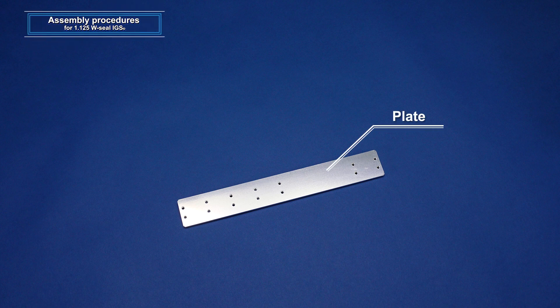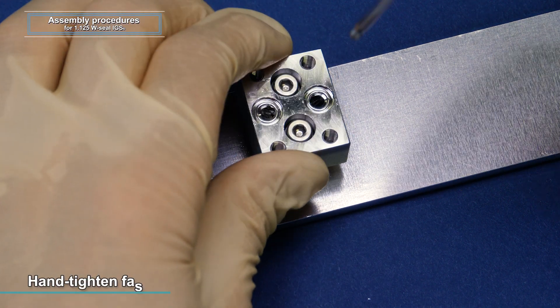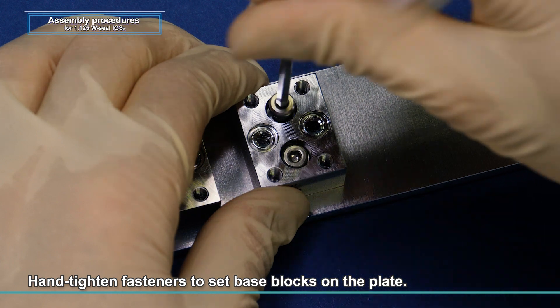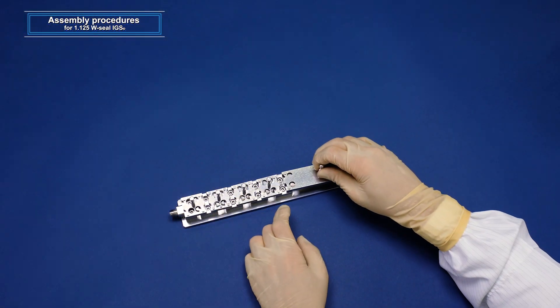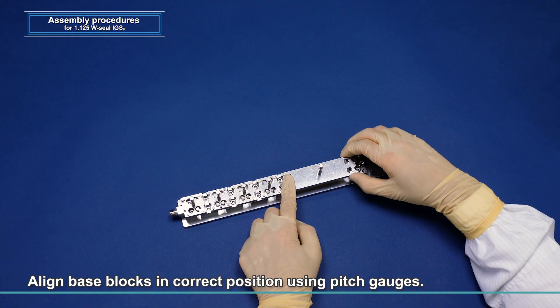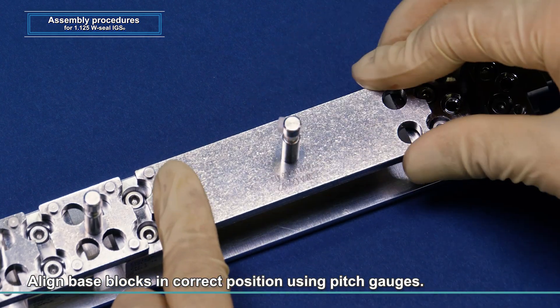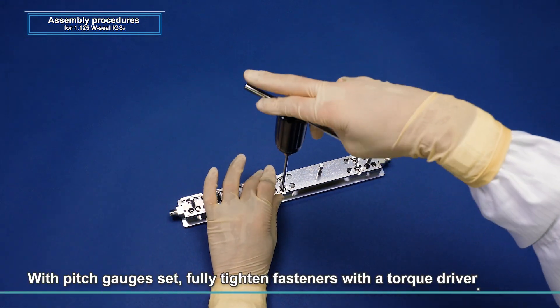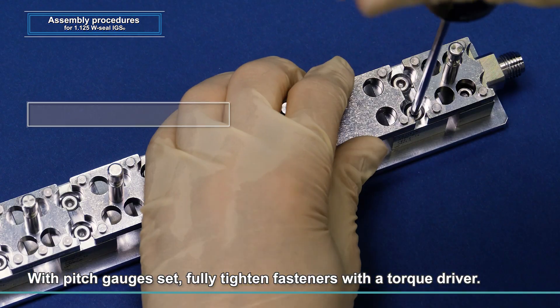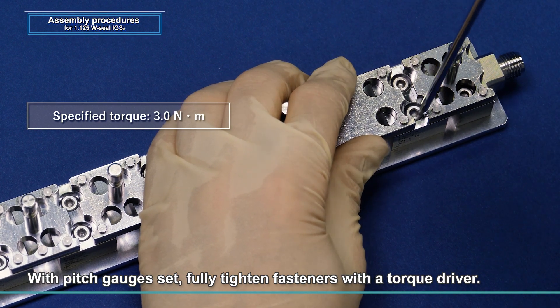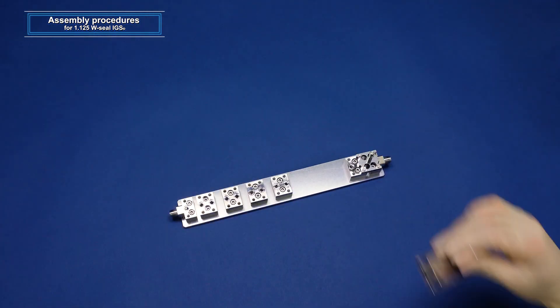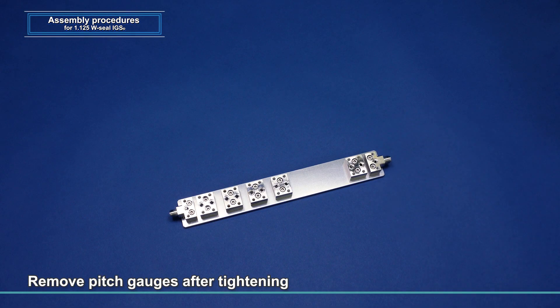Assemble base blocks on the plate, using fasteners to temporarily set the base blocks and the plate in position. Then, align the base blocks in the correct position using a pitch gauge. With a pitch gauge for each base block being set in position, finely tighten fasteners using a torque driver. After this is done, remove the pitch gauges to complete the base block assembly procedures.